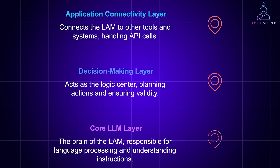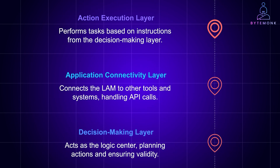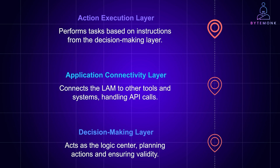Next is the decision-making layer, which acts as the logic center. Once the LLM layer has understood the instruction, the decision-making layer plans out each action, combining neural networks with symbolic AI and applying rules to make sure each step is valid. For example, it might check if you are authorized to access certain data before moving forward. Then we have the application connectivity layer — the bridge that connects the LAM to other tools and systems. This layer handles all the API calls, allowing the LAM to retrieve data, start workflows, or interact with applications like calendars, databases, or email clients. It's what lets LAMs work across different platforms in real time.